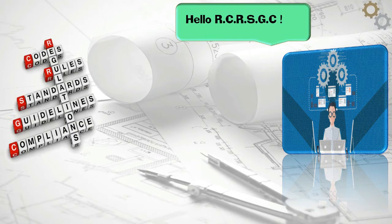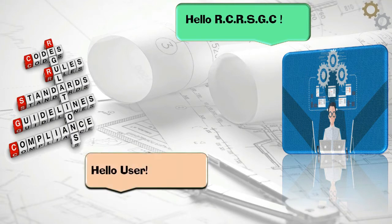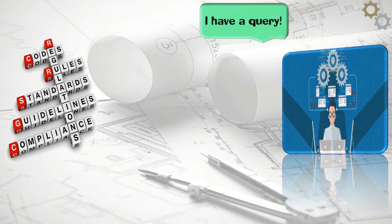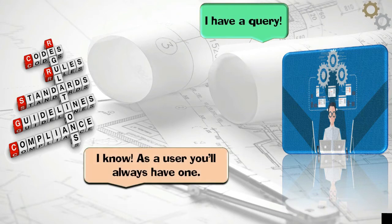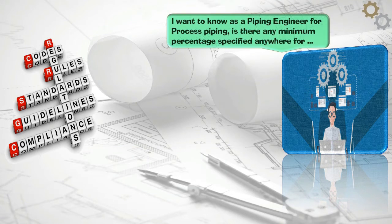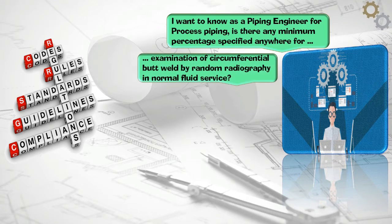Hello RCRSGC. Hello user. I have a query. As a user you'll always have one. I want to know as a piping engineer for process piping, is there any minimum percentage specified anywhere for examination of circumferential butt weld by random radiography in normal fluid service?